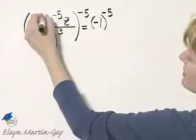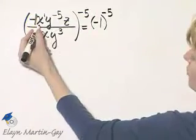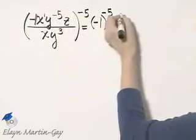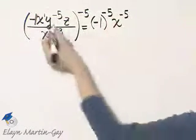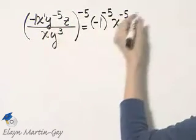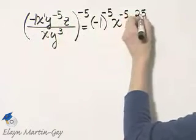Now remember, this x has an understood power of 1, so this will be x raised to the power of 1 times negative 5, or negative 5. This y is raised to the power of negative 5 times negative 5, or positive 25.